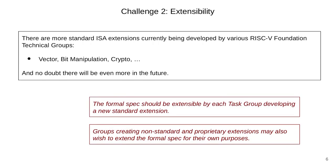The next challenge is extensibility. Because of the nature of RISC-V, every one of the various RISC-V Foundation technical groups is developing their own extensions, and all officially blessed ones need to find their way into the formal spec. Ideally the formal spec needs to be extendable by the developers of those extensions. Anyone pursuing a proprietary extension might also find it useful to add that to the formal spec. So it needs to be easily modifiable and extendable.